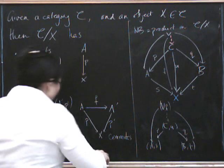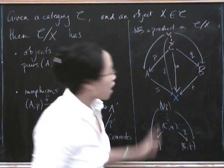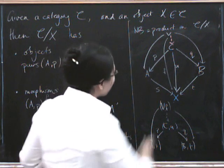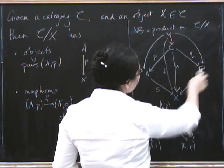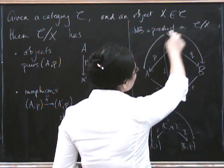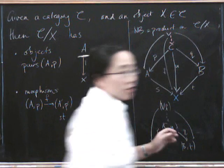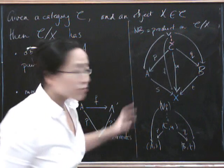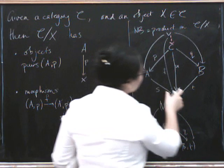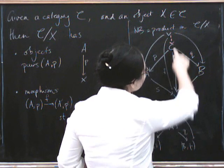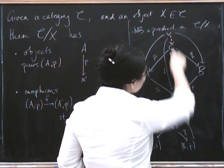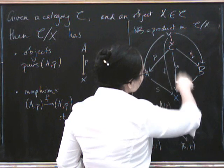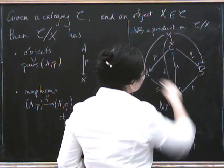Now it should start looking a bit like a pullback to you now. Because if you just ignore these things coming down the diagonals, we've got a square here. And our universal property looks quite a lot like the universal property for a pullback. We just have to make sure that this really is a pullback. So let's think about it a bit harder. Does this square commute? Well yes, it does. Because this triangle commutes with the U thing. And this triangle commutes as well, which means that the square commutes.